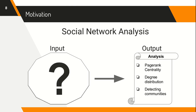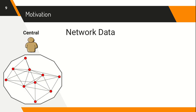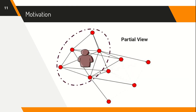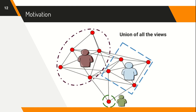However, the motivation for the current work stresses on scenarios where the network is not known in its entirety and is rather present in a distributed setting. Rather than the network data being housed in a central repository, we focus on scenarios where it is distributedly owned by multiple data owners such that each data owner sees only a partial view of the entire network. The union of all the views captures the network in its entirety. Each data owner considers his share of the network data to be private and refuses to disclose it in public.